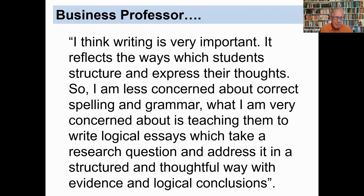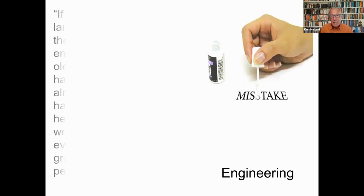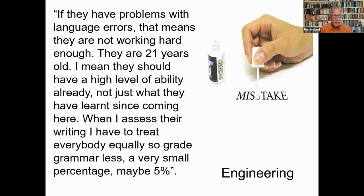For teachers in the sciences, writing seemed less important, and the fact that students were writing in a second language was often treated as a minor issue. As one engineering professor said: if they have problems with language errors, that means they're not working hard enough — they're 21 years old, they should have a high level of ability already. When I assess their writing, I have to treat everybody equally, so I grade grammar very little — maybe 5%. Looking at feedback, it was also different: in the sciences it was less frequent, more cursory — just ticks, underlining, question marks, sometimes only a grade.